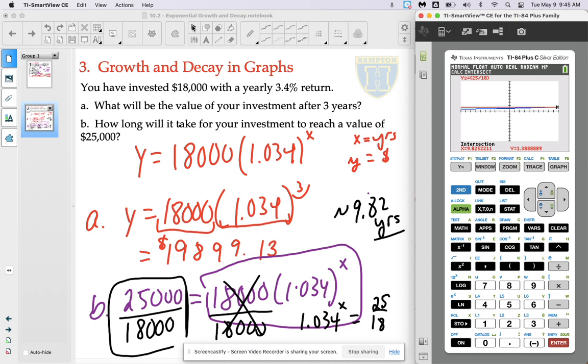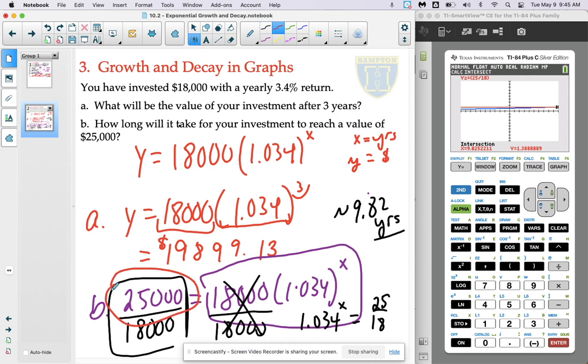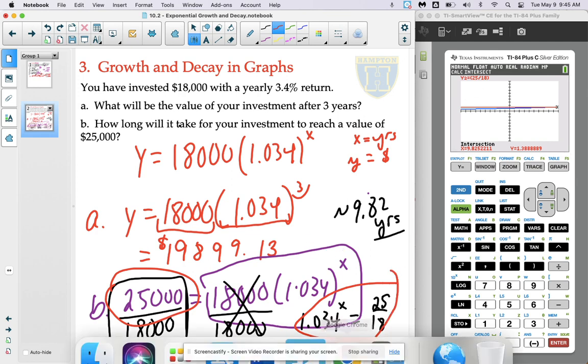So whether you want to do it with the 25,000 that was already there or whether you want to divide by the 18,000 and work with this smaller version, they will both give you the same answer.